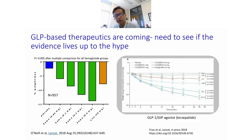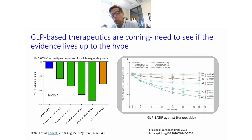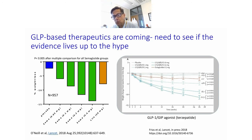GLP-based therapeutics are very exciting because they improve cardiac outcomes, all-cause mortality, chronic kidney disease, and cause weight loss. Semaglutide is coming on strong, with data showing weight loss with semaglutide, combined GLP-GIP and GLP, and also GLP-1 and glucagon agonists. Top-line data from semaglutide produced a 60% resolution of steatohepatitis, but did not have a big effect on fibrosis. Time will tell whether improvement in steatohepatitis will translate into improved fibrosis.